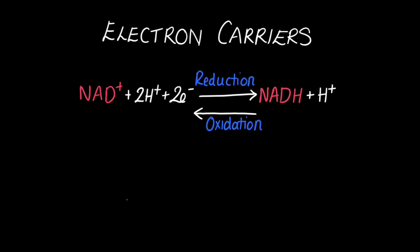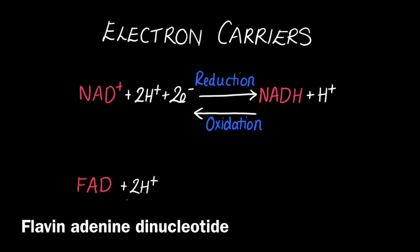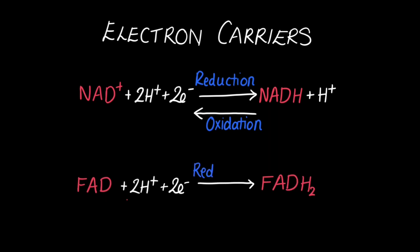It's a very similar process with the other electron carrier used in respiration, which is FAD. FAD stands for flavin adenine dinucleotide. When you have FAD combining with two hydrogen ions and two electrons, it produces FADH2. Because this process involves a gain of electrons, this is reduction. Vice versa, if you split FADH2 back into two electrons, two hydrogen ions and FAD, since you're losing electrons, this process is oxidation.